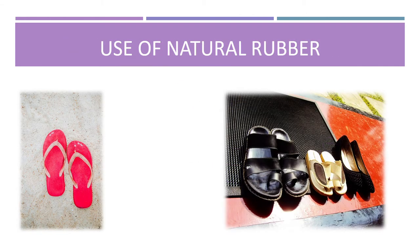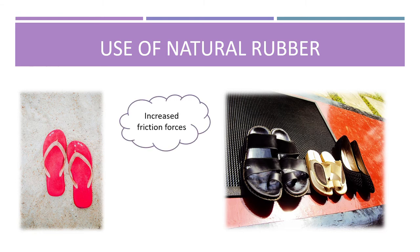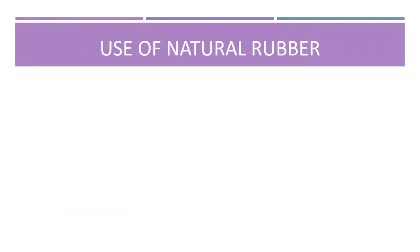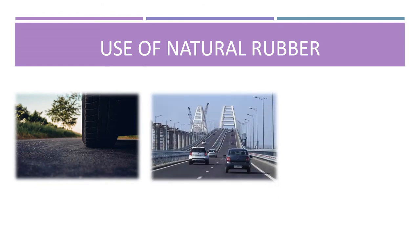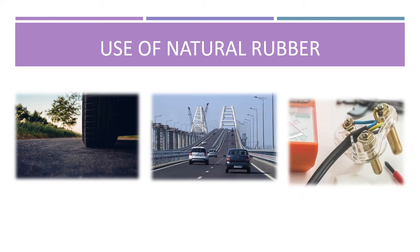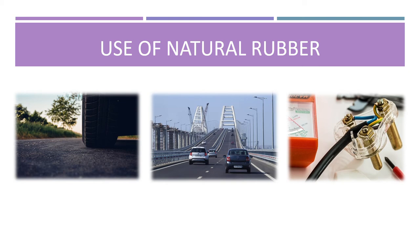Moving on, let's look at the uses of natural rubber in our daily lives. Natural rubber increases friction forces. As such, it is used to make soles of slippers, door stoppers and floor mats. Latex is added into cement mixtures along with rubberized bitumen that paves the surface of roads and bridges. Natural rubbers are also widely used as insulators for electrical appliances and cables.